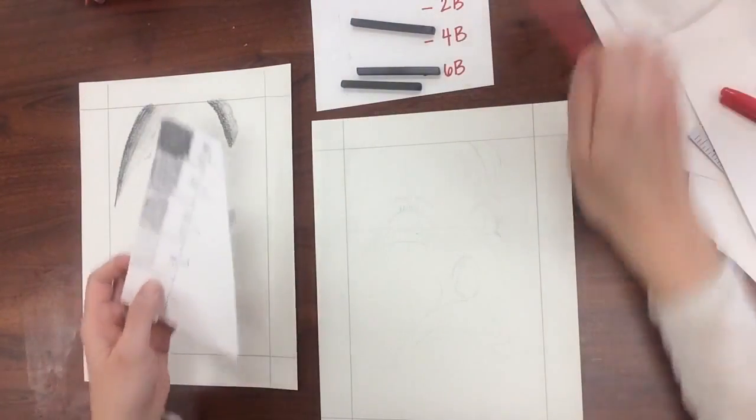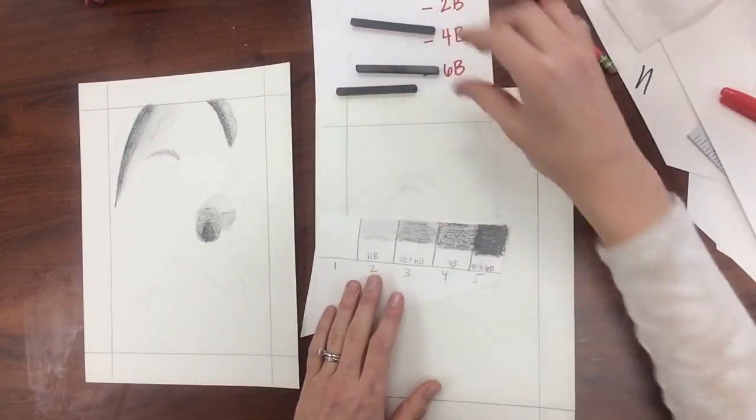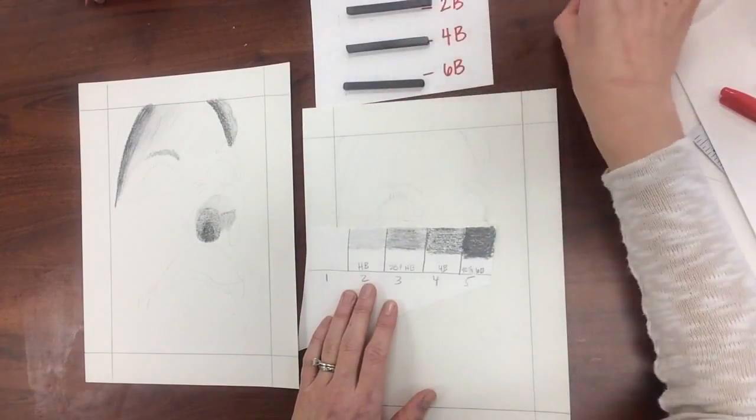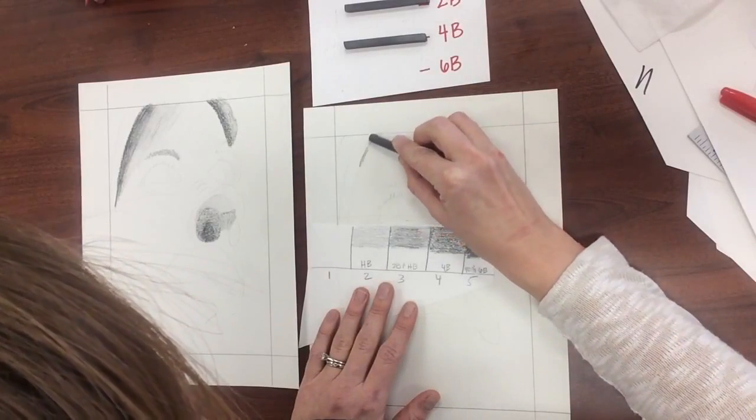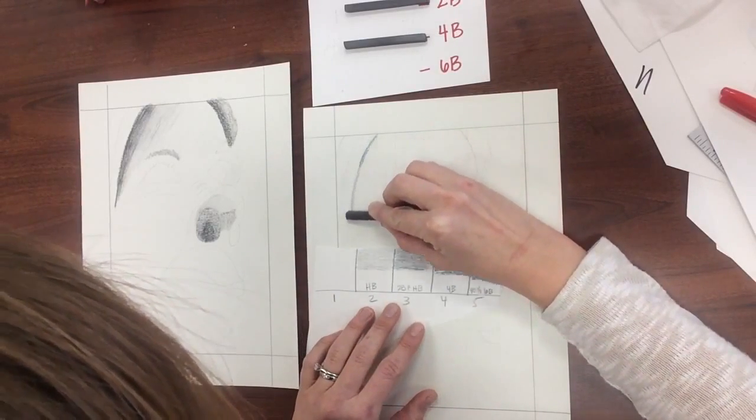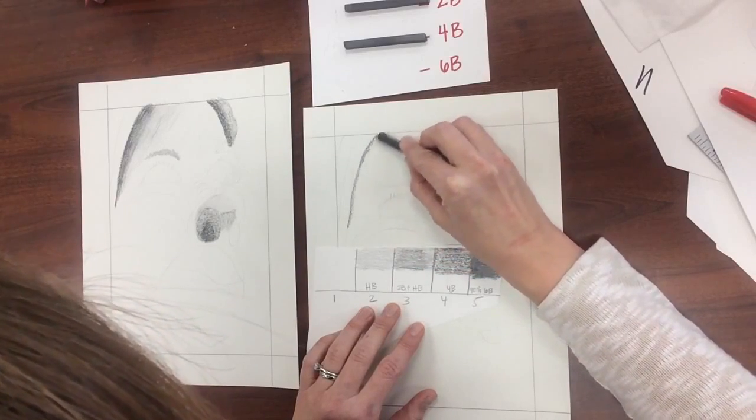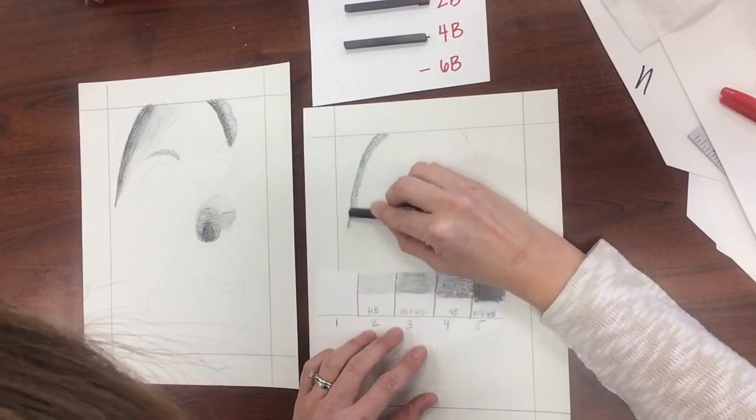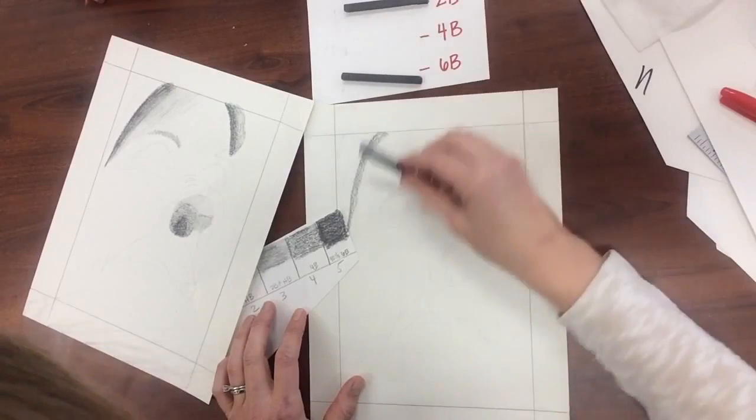Alright, so when I use my graphite sticks, I'm going to start with my darkest value here under my hairline with my 6B. I'm not going to press too hard because these graphite sticks, they will break. But also the 6B is so soft that it gets dark enough without pressing really hard. So I'm going to check that out. I need a little bit of my 4B in there.